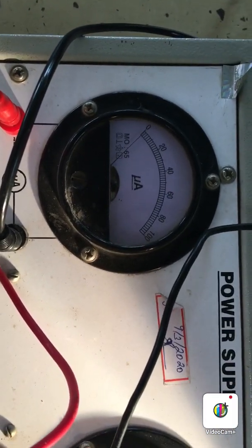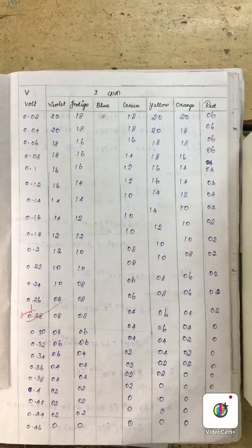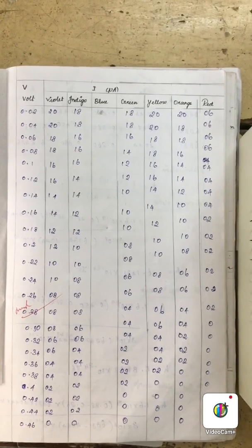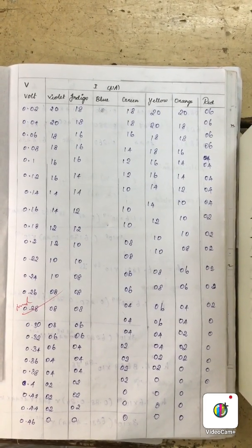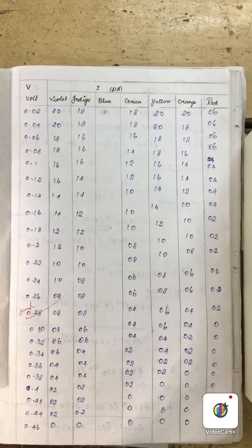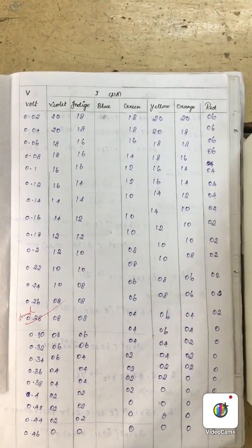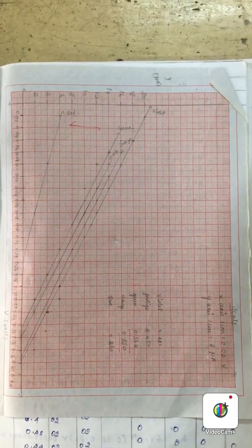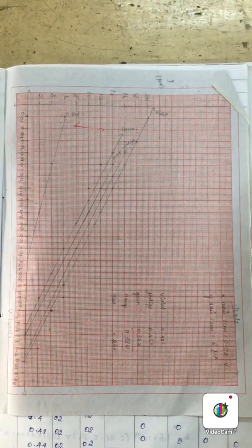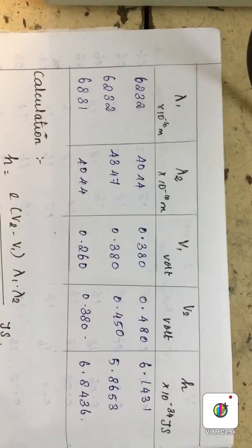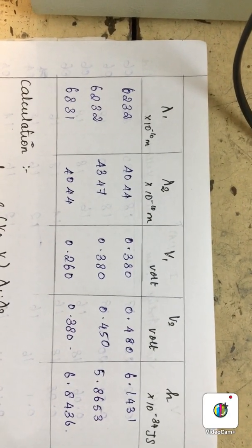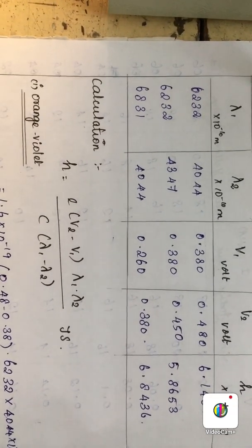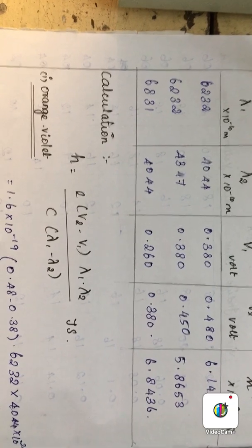This is the detailed reading — same stopping potential, and with I varied by varying the potential, you can record the current for different colored filters. Using this tabulation you can plot a graph showing the relationship between I and V. Using the voltage readings and the wavelength values, you can calculate H, that is Planck's constant, using the formula.